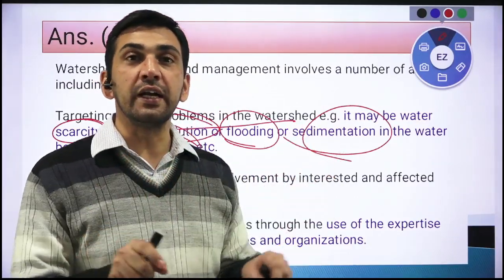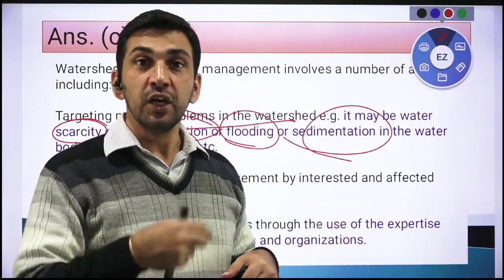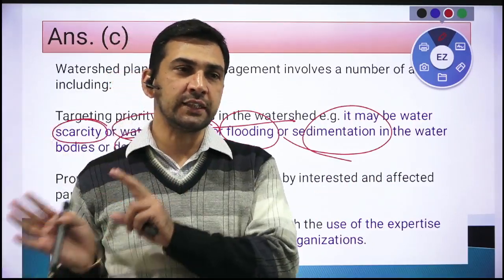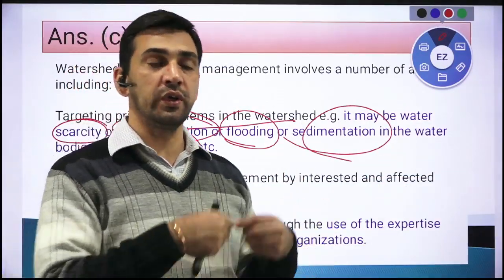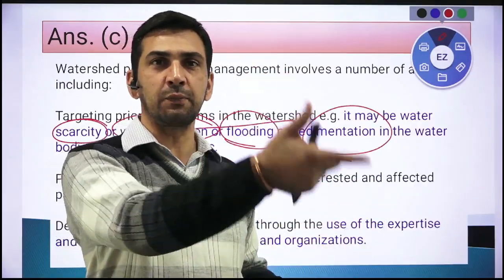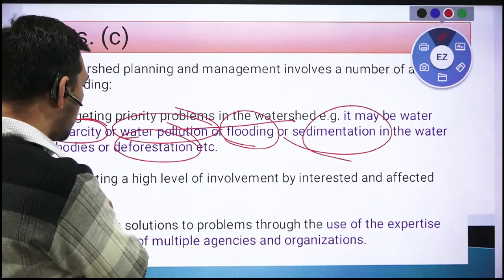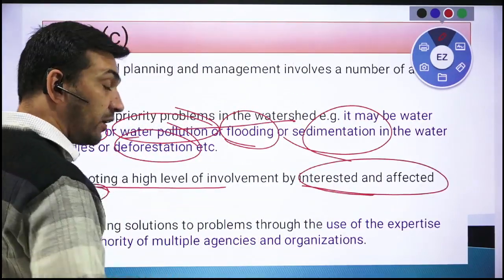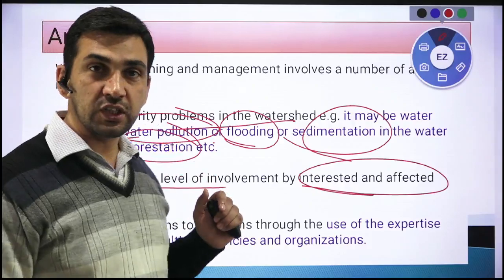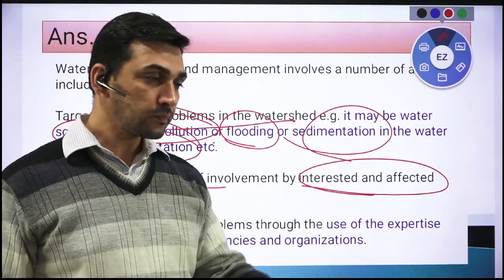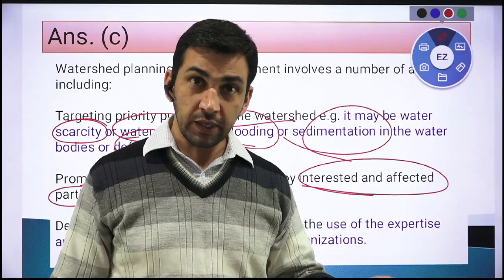The second step is promoting the involvement of interested and affected parties. You need to identify the people who are affected — those living in the watershed who face flooding, pollution, or deforestation issues. You need to involve those people in the planning process. Simply providing solutions from outside without involving them will not work. Also involve interested organizations that have expert knowledge and want to contribute.